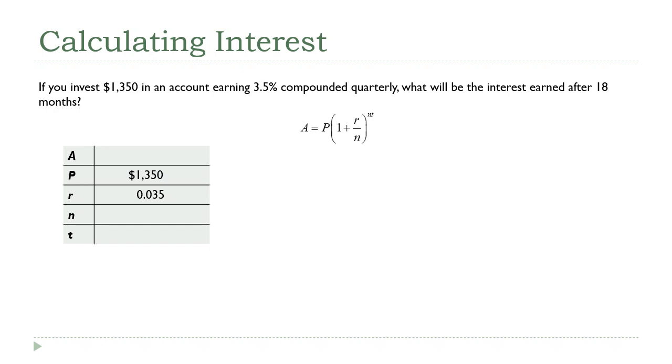The interest is being compounded quarterly, and there are four quarters in a year. Here it gets a little unusual. We're given the timeframe in months, and we need the timeframe to be in years. You need to be on the lookout for that. But it's an easy conversion. I'm going to take 18 months, divide it by 12 months per year. We're going to get a year and a half.